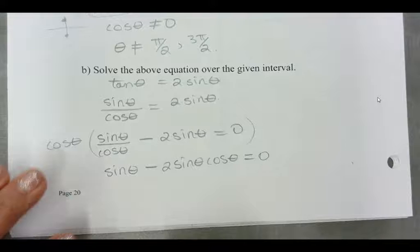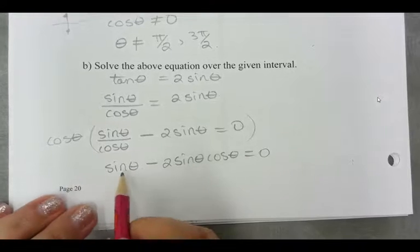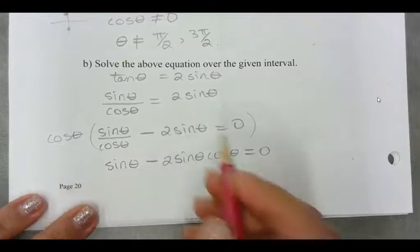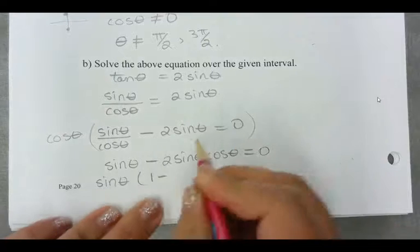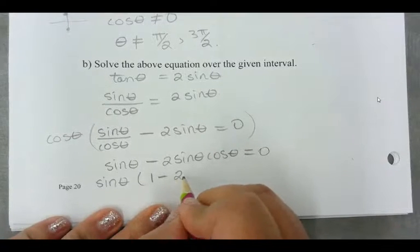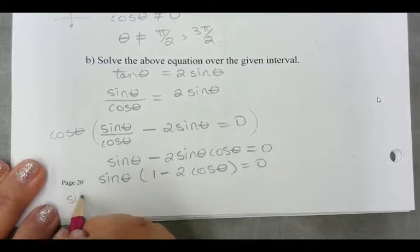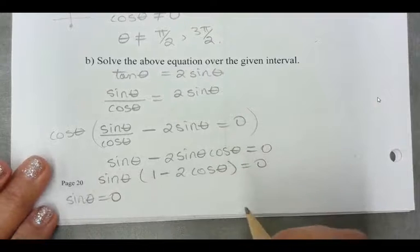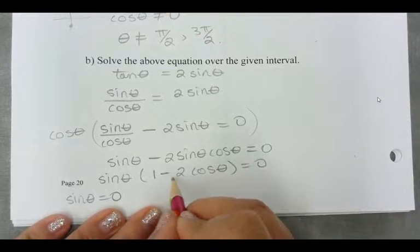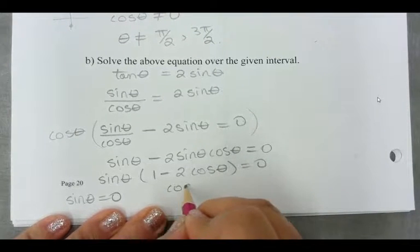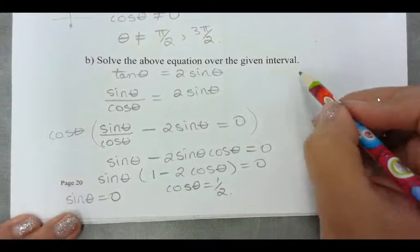What can I do at this point here? Factor out the sine. Sine theta times 2 cos theta. So now I've got my two factors. I'm going to solve sine theta equals zero and I'm also going to solve this factor here gives me cos theta equals a half. So now I'm going to move up and finish the question.